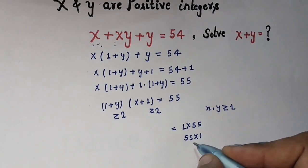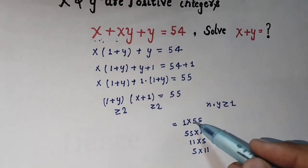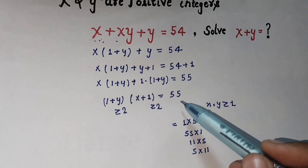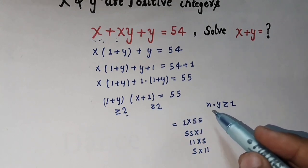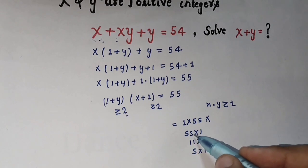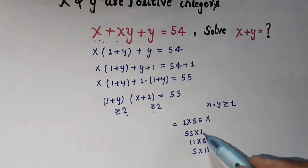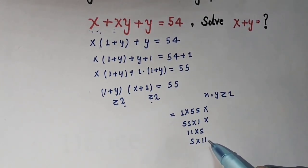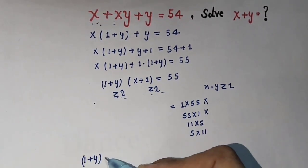The factor pair 1 times 55 is rejected because the left side requires (1 plus y) to be greater than or equal to 2, and 1 does not satisfy that. Similarly 55 times 1 is rejected because x plus 1 would equal 1, which is not valid. Therefore the only valid factor pairs are 11 times 5 and 5 times 11, since both 11 and 5 are greater than or equal to 2. This gives us two cases.